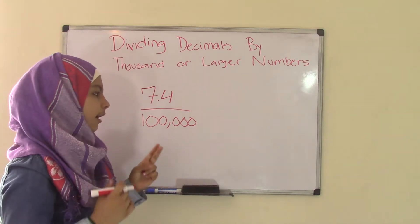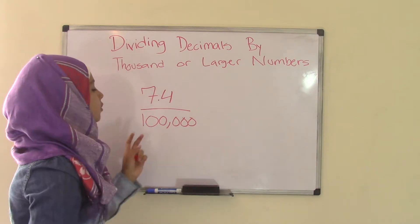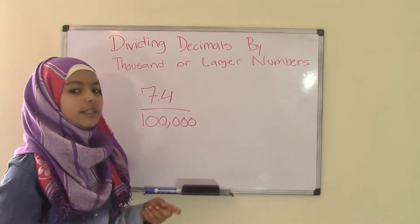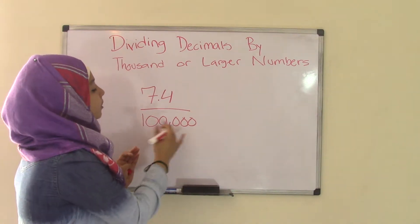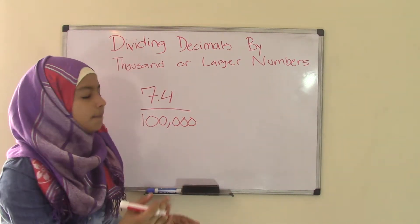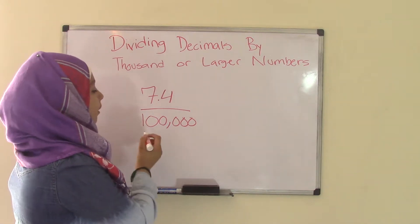And that's the reason for using that method. Now if that was just 7.4 divided by 10, you could just write it down and divide. But as the numbers get larger, it takes a long time. So that's the main reason for using that method. So what you're going to do is count the number of zeros.